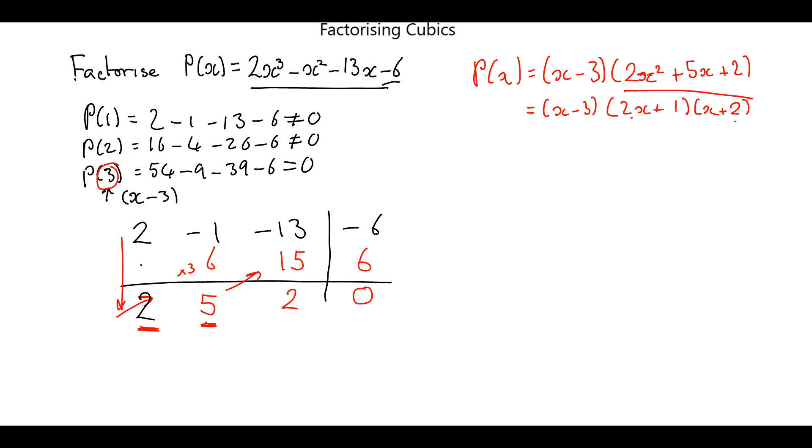And this is a 1. 1 times 1 is going to give us 1X. Added together gives us our 5X. So there's our answer. I'll just make it clearer: P of X equals X minus 3 times 2X plus 1 times X plus 2.